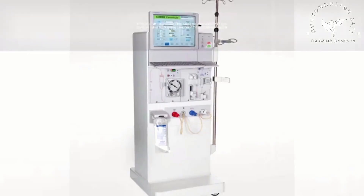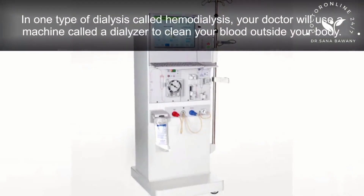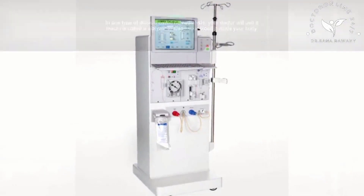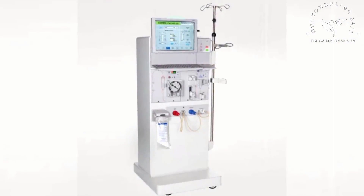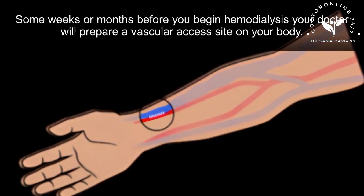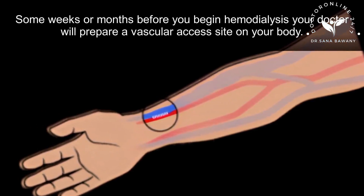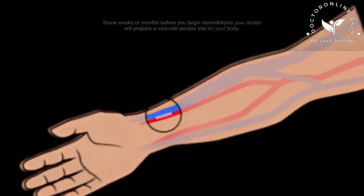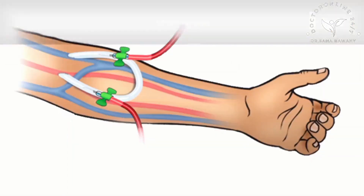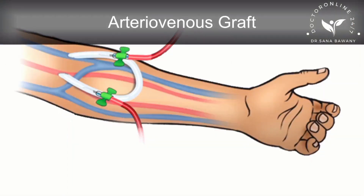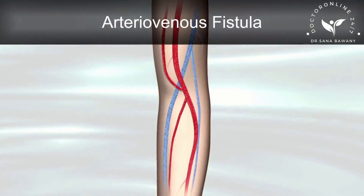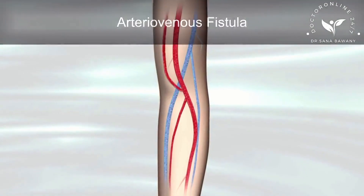In one type of dialysis called hemodialysis, your doctor will use a machine called a dialyzer to clean your blood outside your body. Some weeks or months before you begin hemodialysis, your doctor will prepare a vascular access site on your body, creating either an arteriovenous graft or an arteriovenous fistula to access your bloodstream.